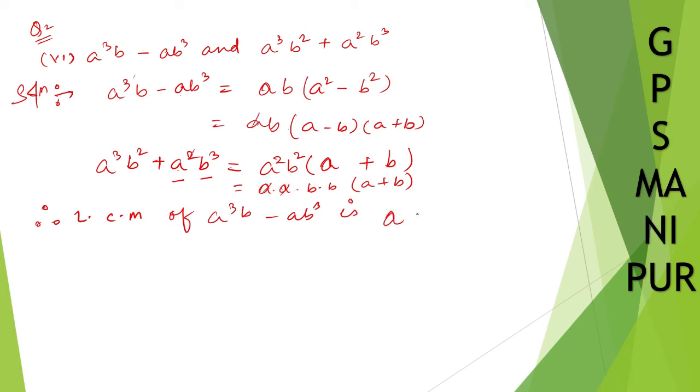One a is left out, write down that a also. b common, so write down that b. And one b is left out, so write down that. Now a minus b, a plus b, a plus b is here, so take one a plus b. And a minus b is also left out, so write down a minus b.